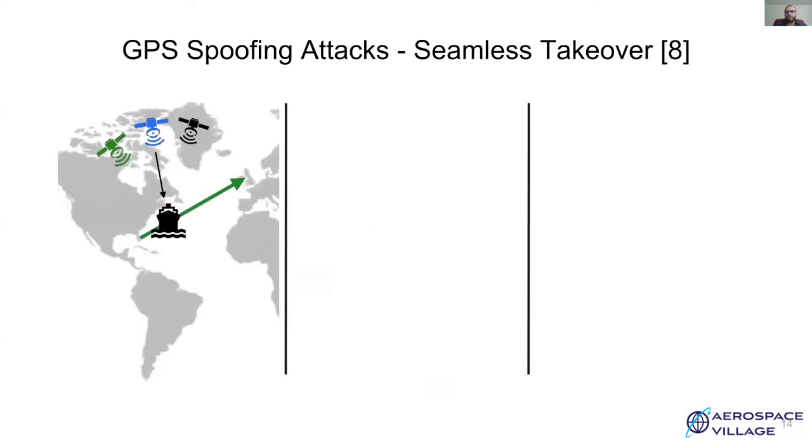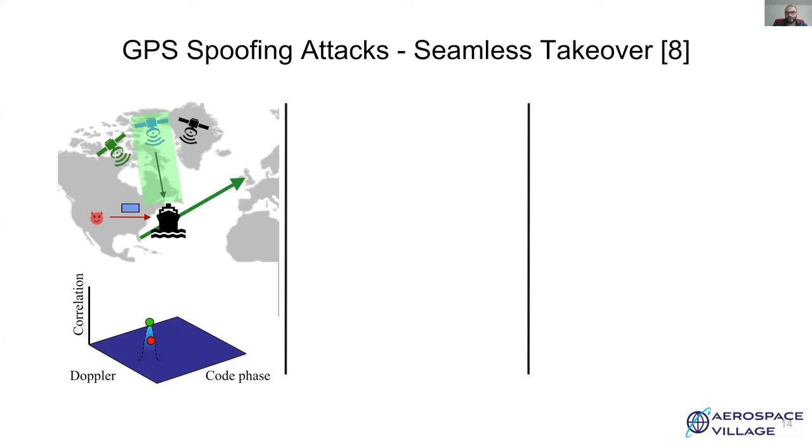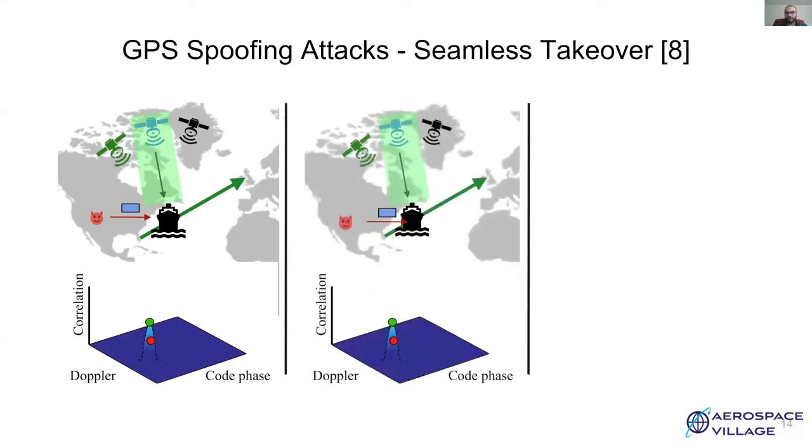Let's take a look at one of the most sophisticated GPS attacks. In a seamless takeover attack, the attacker starts transmitting with lower power than the legitimate signal. It is important to note that the adversarial signals are tightly synchronized with the legitimate signals in time domain as well as frequency domain. Later, the attacker slowly starts increasing the power and overshadows the legitimate signal while maintaining synchronization. As a result, the receiver starts tracking the adversarial signals instead of the legitimate signals. Since the attacker's signal is stronger, the noise floor rises and the tracking loops are thrown off. Thus, the receiver breaks a lock.